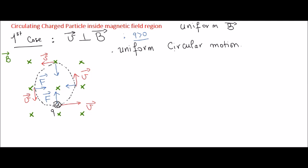I'll provide a link in the video where you can see an experiment showing a charged particle — an electron beam — inside a magnetic field, and you can see that the motion is really circular. It's uniform circular motion: we have a circle, the speed is constant, and the motion is in the plane perpendicular to B. Since we chose V perpendicular to B, the particle stays in this plane.